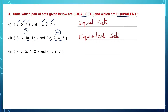Third one: let's see if the elements are the same. I have 7 in this set and 7 there, 2 here and 2 there, 1 here and 1 there. I have the same elements in both sets. Such sets are called equal sets.